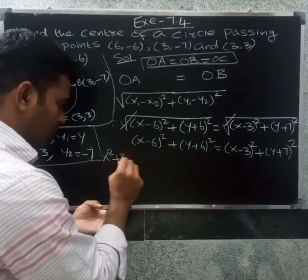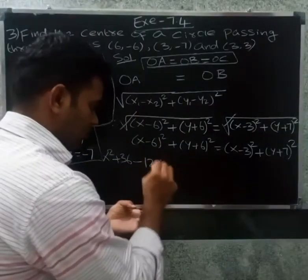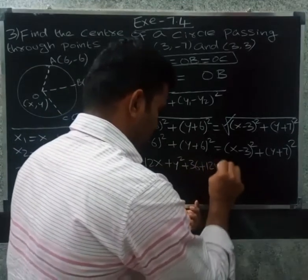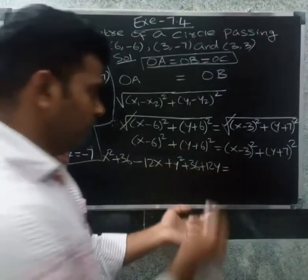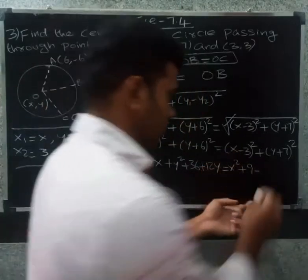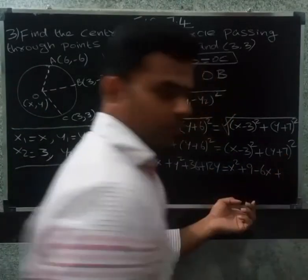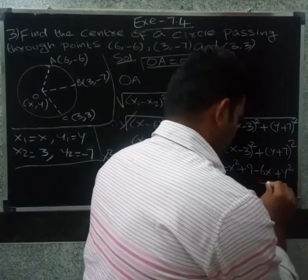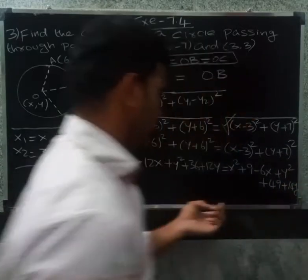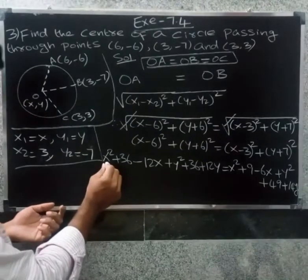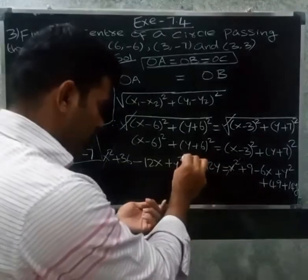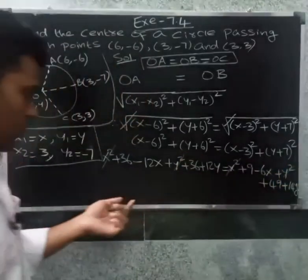Expanding using (a minus b) whole square equals a square plus b square minus 2ab: (x minus 6) whole square gives x square minus 12x plus 36, and (y plus 6) whole square gives y square plus 12y plus 36. Similarly expand the right side. Now x square and y square cancel out.